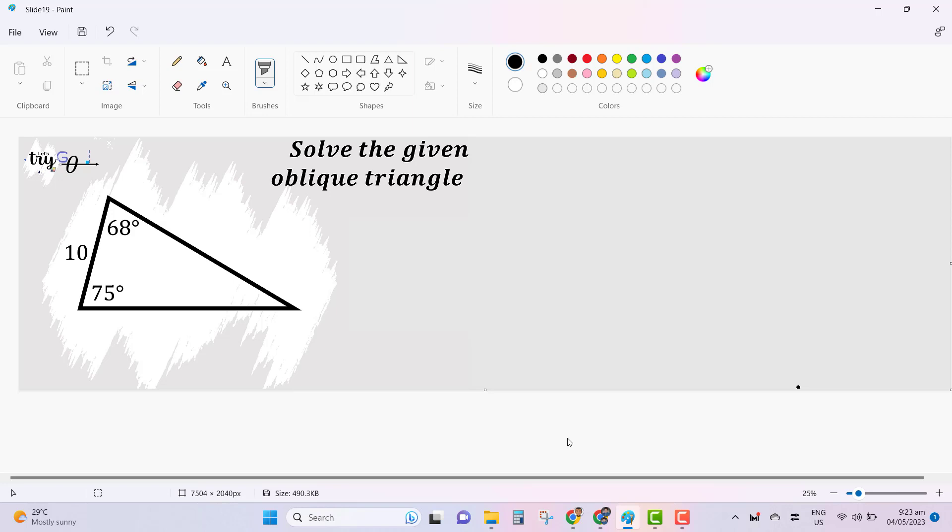Hello everyone! For this given oblique triangle, we are tasked to solve it. When you say solve, we are going to determine the remaining measurements. In this case, we are going to solve for the measurement of this angle and these two side measurements here.